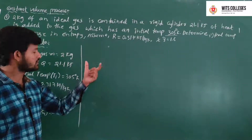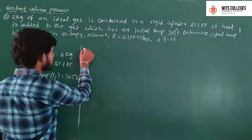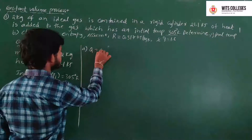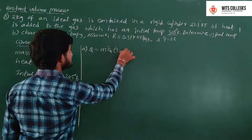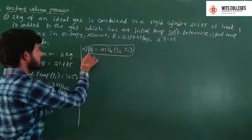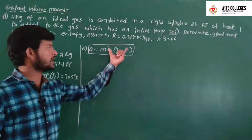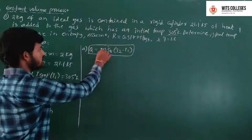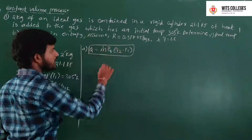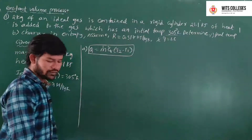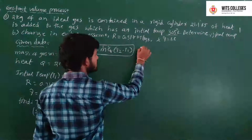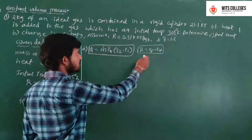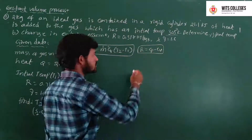We find the final temperature T2. We know the equation of heat transfer in the constant volume process: Q equals M into CV into (T2 minus T1). Q and M are given, but CV is not given, so we find CV. Using R equals CP minus CV, we derive CV equals R divided by (gamma minus 1).